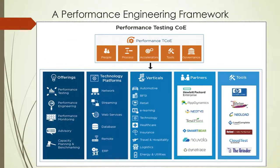We saw how the performance engineering framework is organized in organizations today — what the labels are: performance testing, different types of tools, accelerators, people, processes, different technology stacks, platforms, and domains. It is what we are doing in banking, financial, retail, healthcare, insurance, and other domains. Then there are tools and partners — companies that have partnered with giants like HP, NeoLoad, and Dynatrace for APM. This is a typical performance engineering framework.